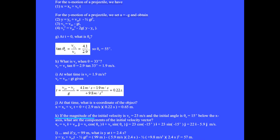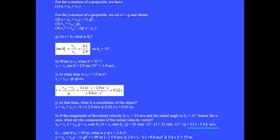Question K: If the magnitude of the initial velocity is v sub 0 equals 23 meters per second and the initial angle is theta sub 0 equals 15 degrees below the x axis, what are the components of the initial velocity vector? Since the angle is below the x axis, we treat theta 0 as minus 15 degrees. The vector v sub 0 equals v sub x i hat plus v sub y 0 j hat equals 23 cosine(minus 15 degrees) i hat plus 23 sine(minus 15 degrees) j hat equals 22 i hat minus 5.9 j hat meters per second.